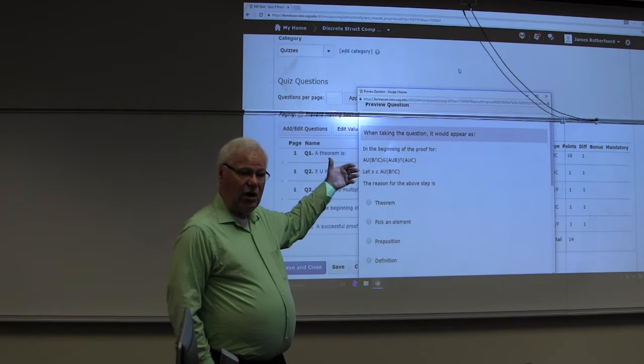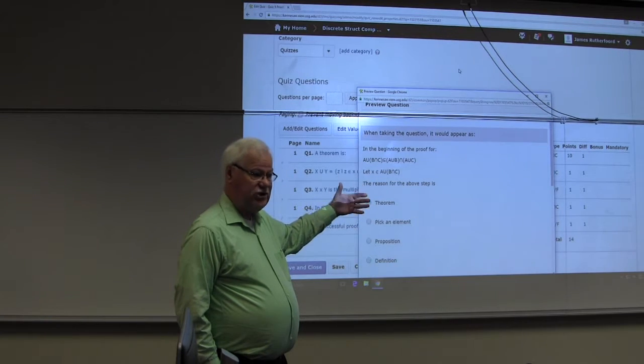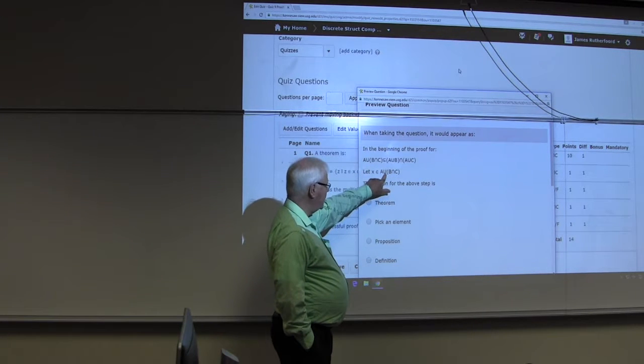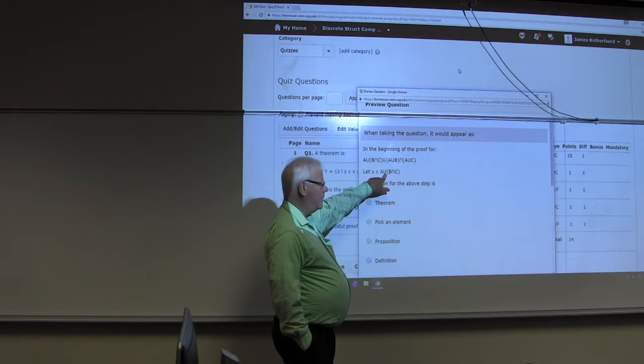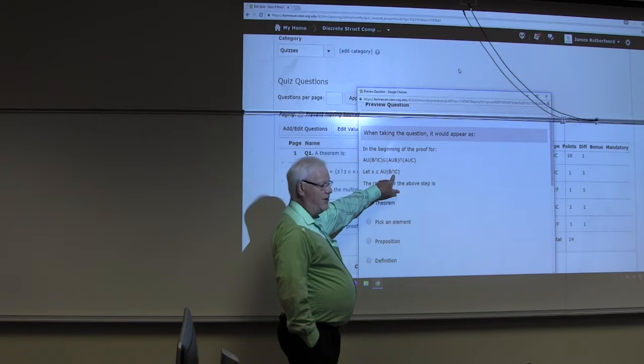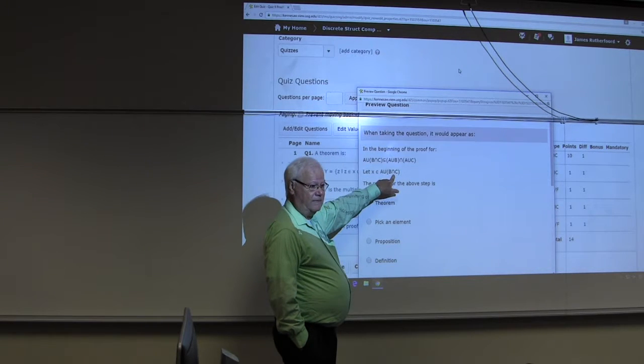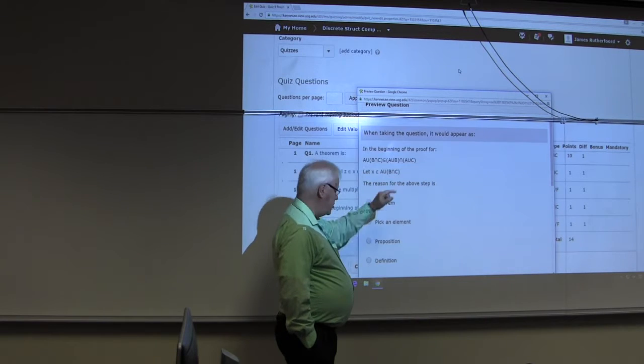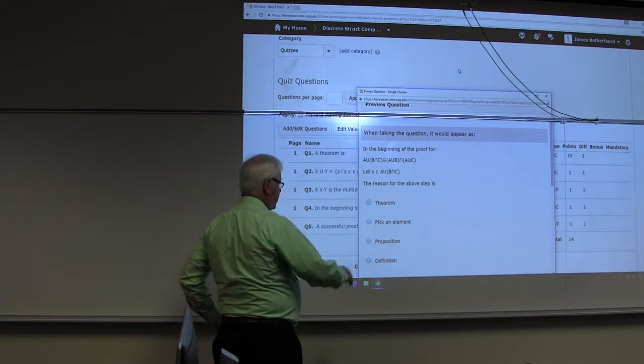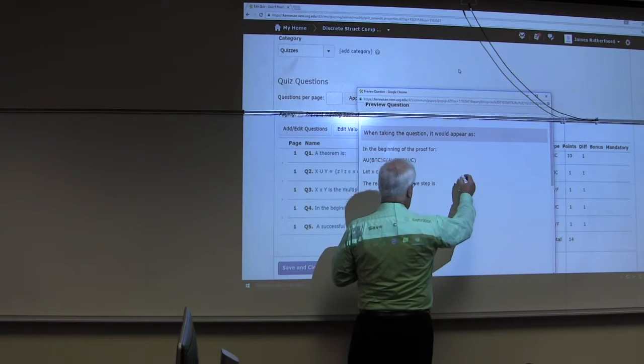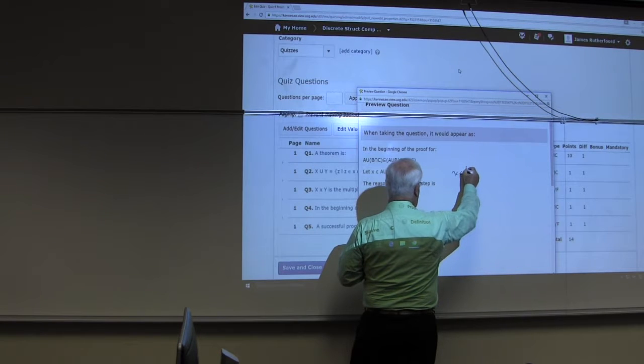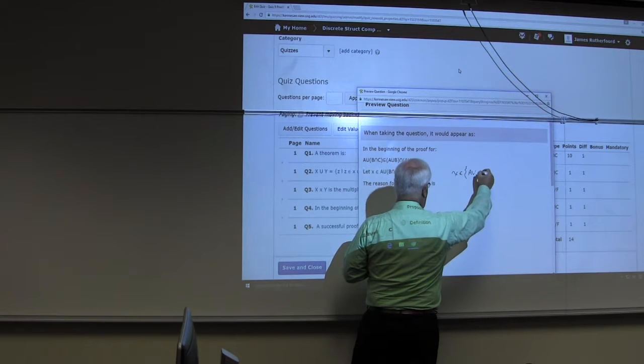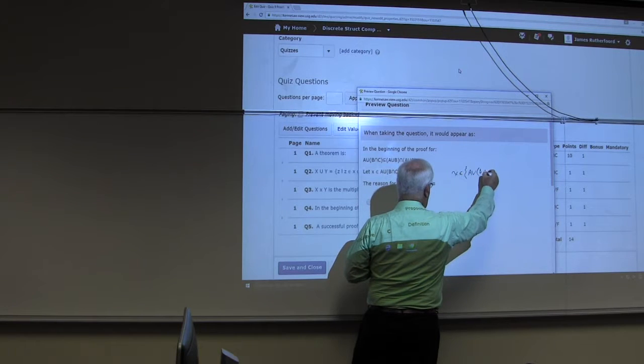Well, if we go back to what I told you earlier, all of the operations and sets are defined by logic operations. So once I've done this, if x is an element of this, take the union part and define it. That means x is an element of a or x is an element of b intersect c. But if x is an element of b intersect c, that means x is an element of b and x is an element of c. And eventually then you come out with a statement, several statements down, where you're going to have x is an element of a or b and c.